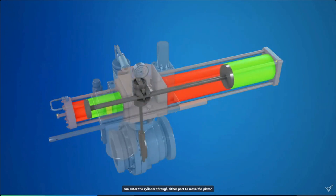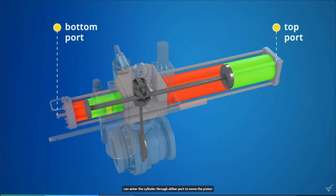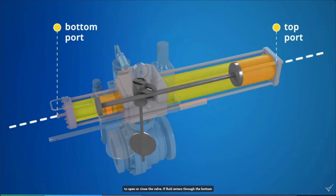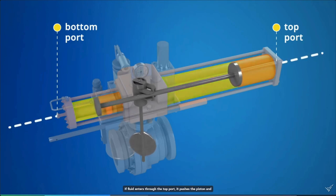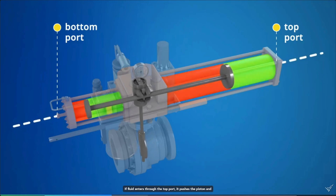Fluid can enter the cylinder through either port to move the piston to open or close the valve. If fluid enters through the bottom port, the piston and piston rod move and open the valve. At the same time, an equal volume of fluid flows out the top port. If fluid enters through the top port, it pushes the piston and piston rod in the opposite direction, closing the valve. An equal volume of fluid is bled through the port at the base of the cylinder.